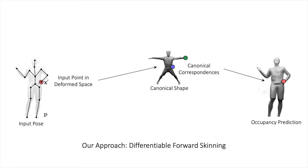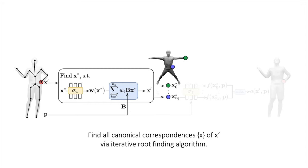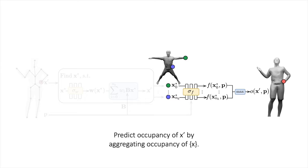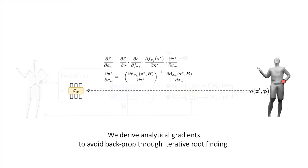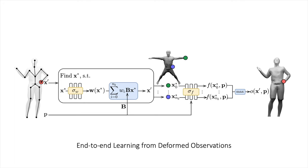We tackle this problem by deriving a differentiable forward skinning formulation. More concretely, we first find all canonical correspondences of a deformed point via iterative root finding. We then predict the occupancy of the deformed point by aggregating occupancy information from the set of all roots while conditioning on the object pose. We derive analytical gradients for this process via implicit differentiation to avoid backpropagation through the iterative root finding algorithm. This enables our model to learn both shape and forward skinning weights end to end from deformed observations.